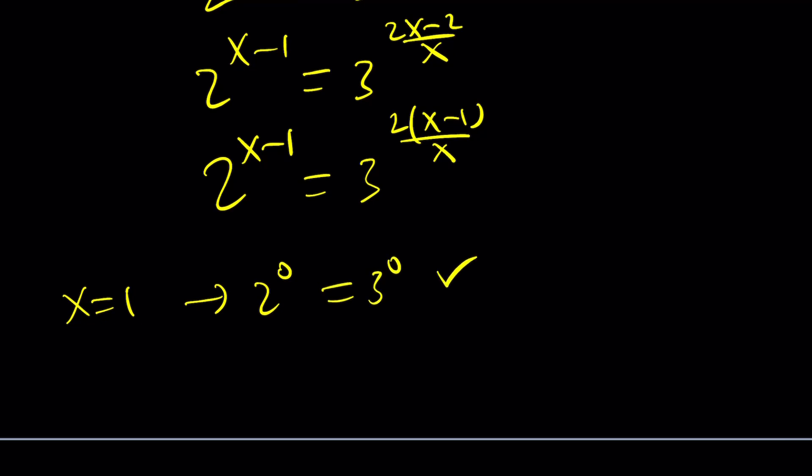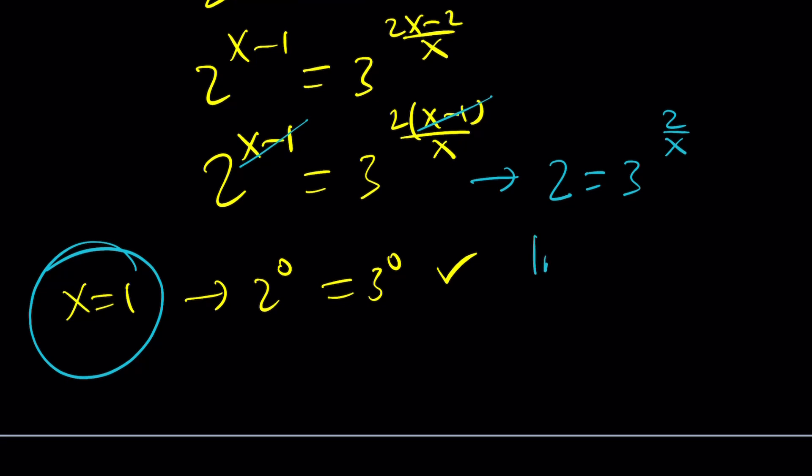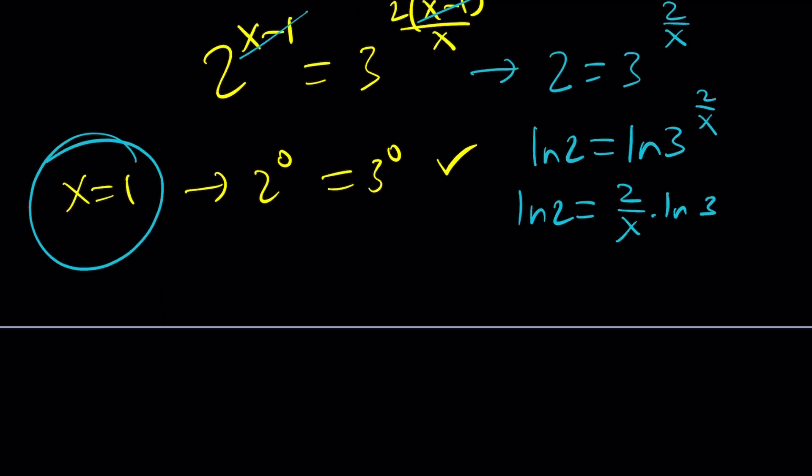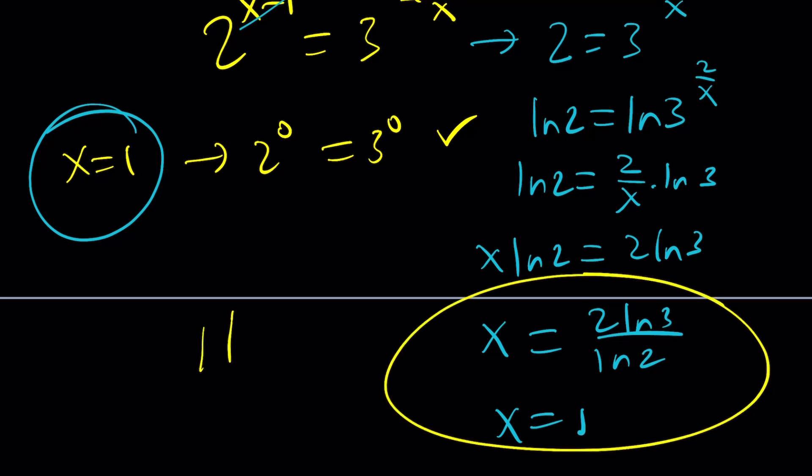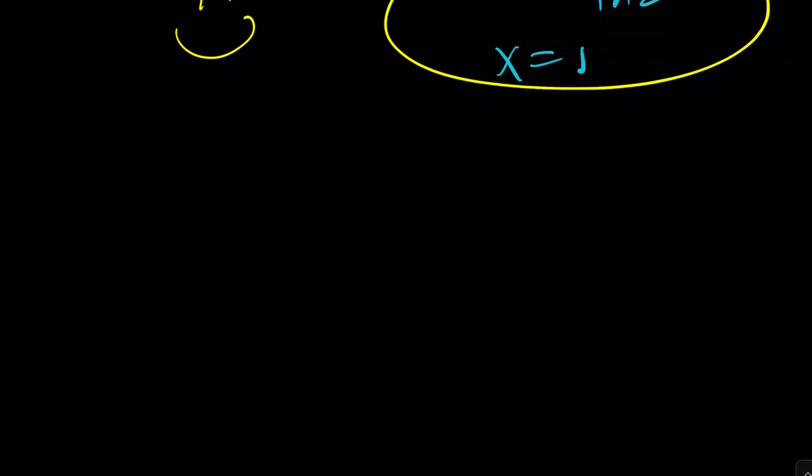In other words, raise both sides to the power of 1 over x minus 1. This is going to give us 2 equals 3 to the power 2 over x, which is kind of nicer. And then you can ln both sides. Because in this case, the solution will be fairly easy. ln 2 equals 2 over x ln 3. Multiply both sides by x. You get x ln 2 equals 2 ln 3. And then finally, divide by ln 2, and you get 2 ln 3 over ln 2. Along with x equals 1, these are going to be all the solutions. Let's take a look at some results from Wolfram Alpha and a graph.